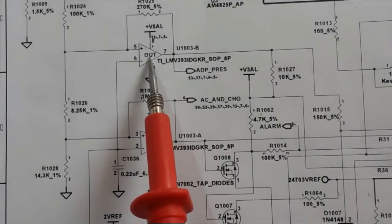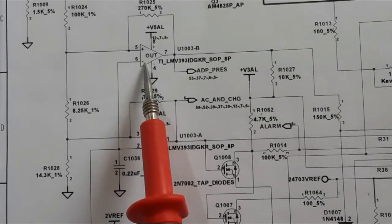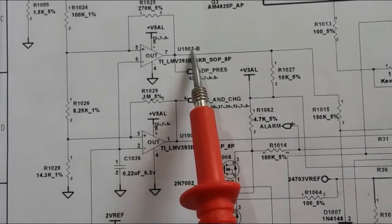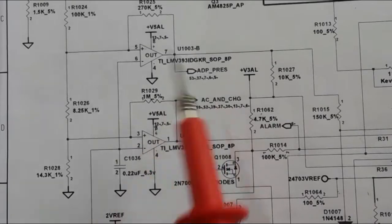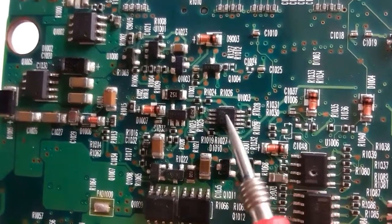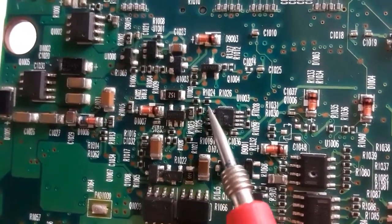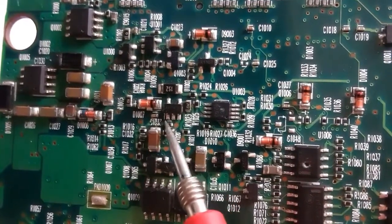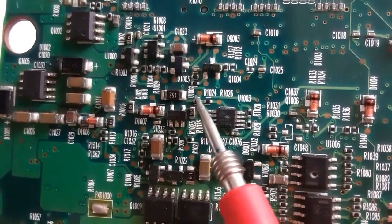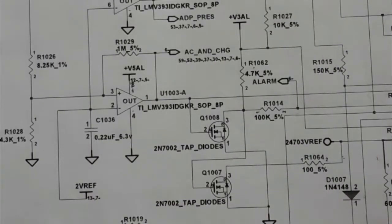Here we're going to see some amplifiers. This IC has plus and minus inputs and eight pins. This is its reference in the motherboard — U1003, with eight pins, four on each side. Here we have another IC with five pins — this is a voltage converter IC that converts a high voltage to a lower voltage. We'll check it in the schematic.